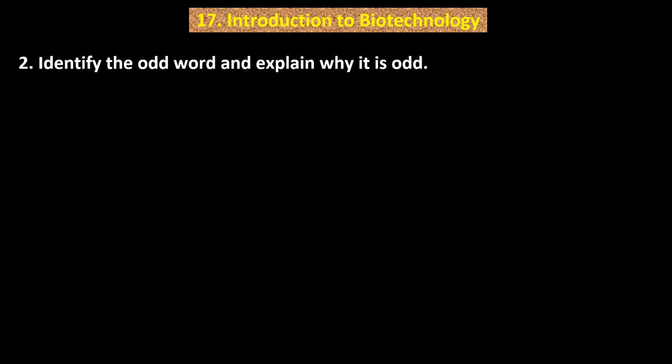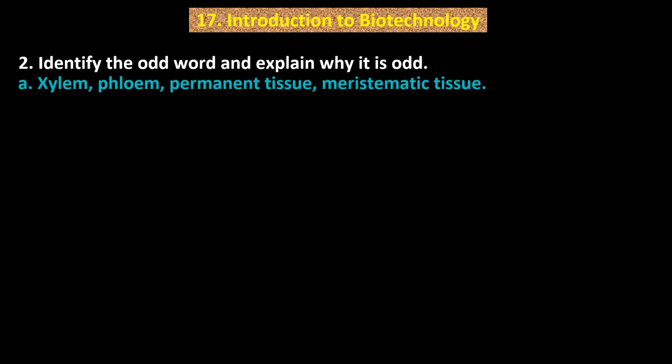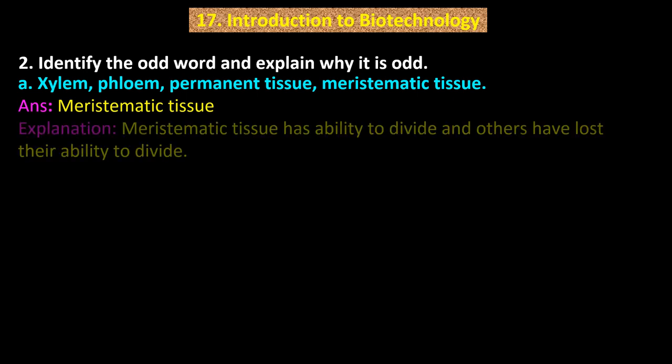Question number 2. Identify the odd word and explain why it is odd. Point A: Xylem, phloem, permanent tissue, meristematic tissue. Answer: Meristematic tissue. Explanation: Meristematic tissue has the ability to divide and others have lost their ability to divide.